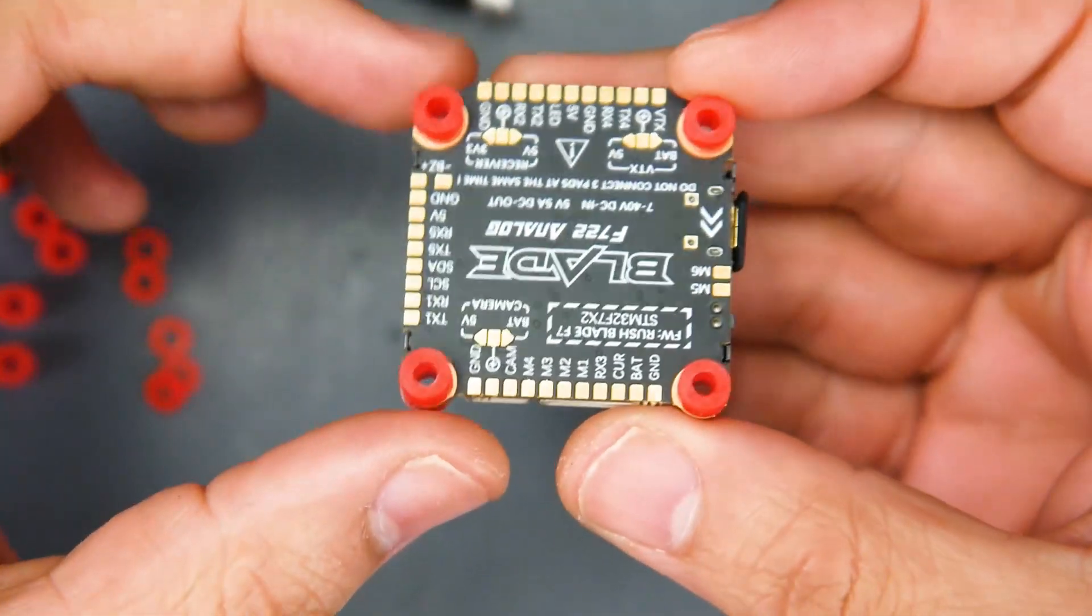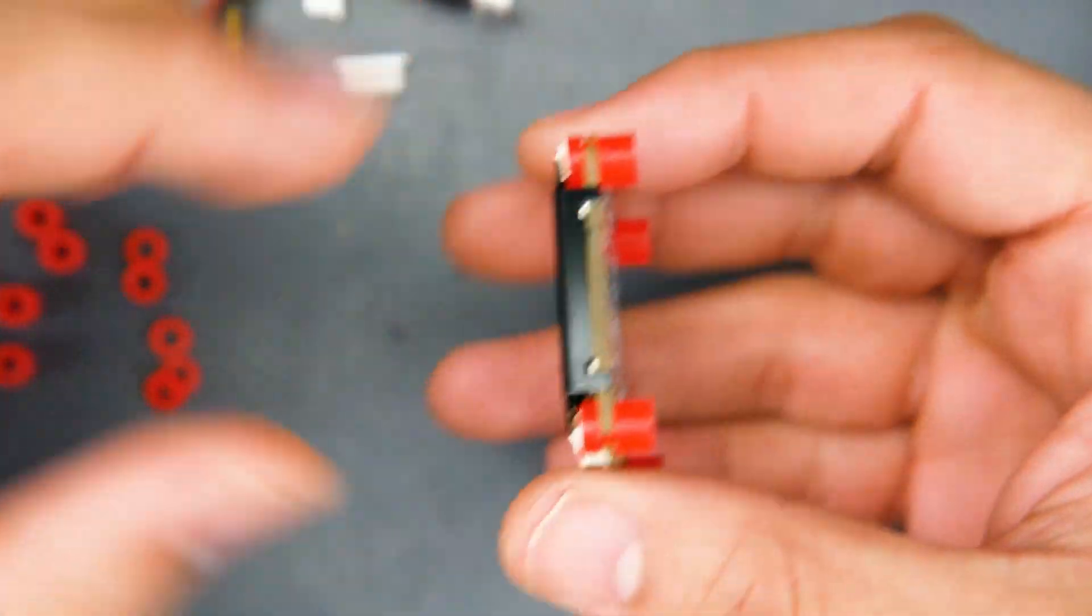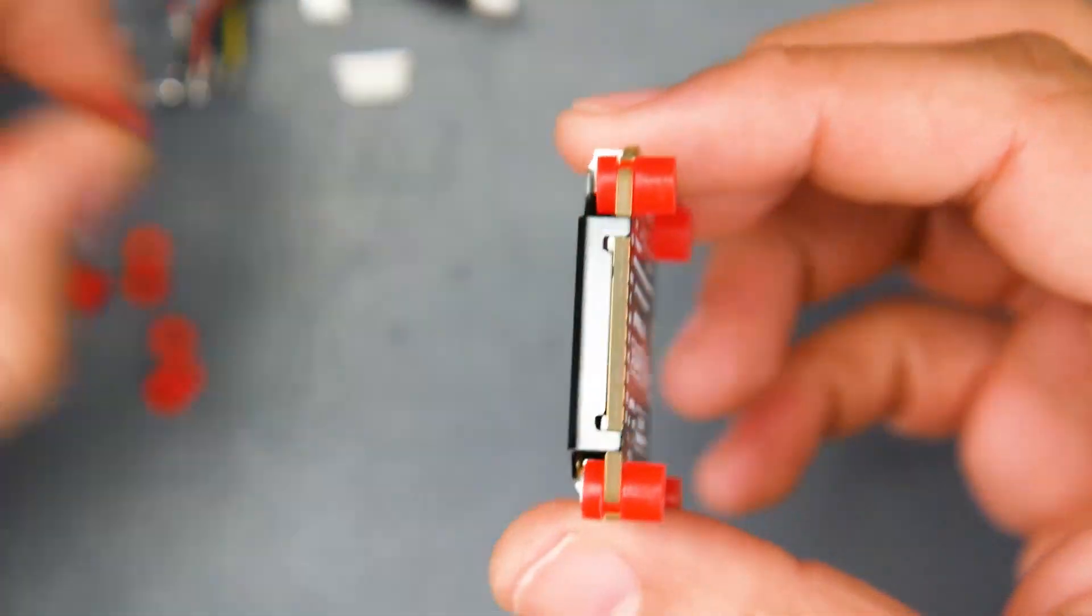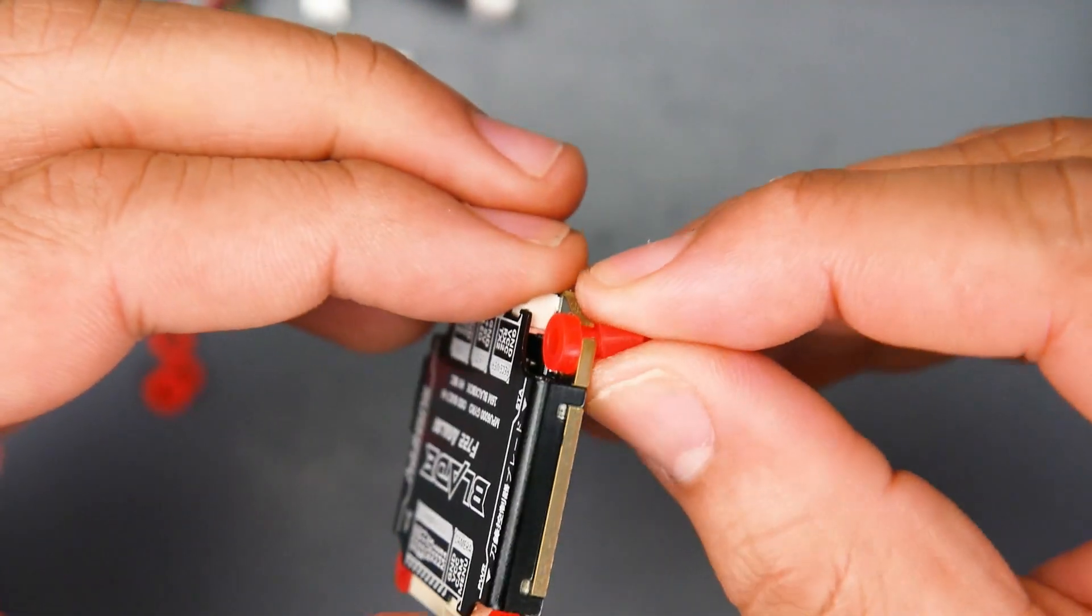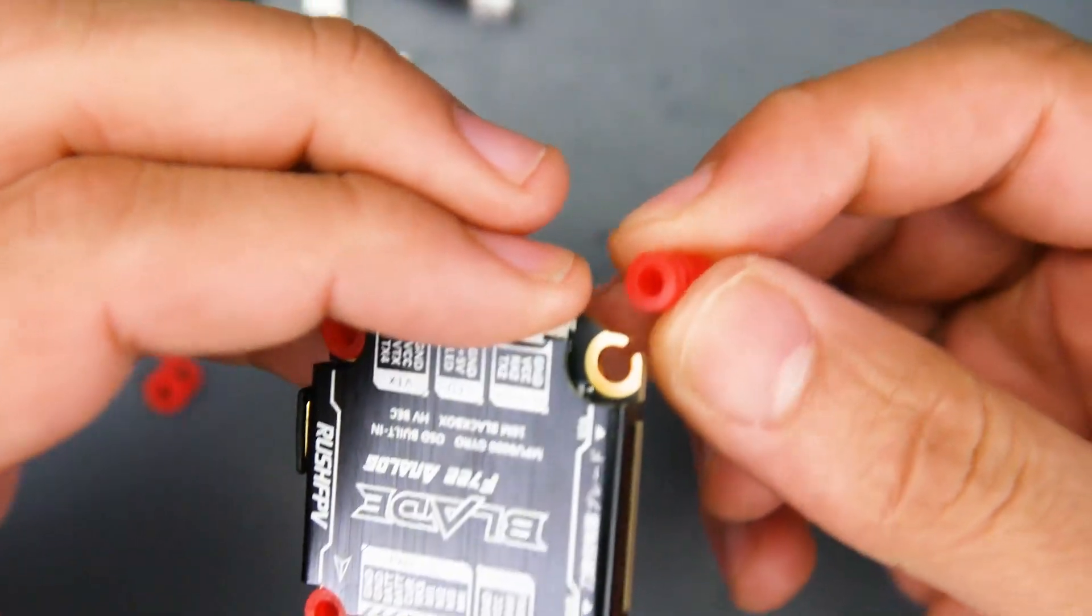Now for rubber grommets, they give you five of these longer ones. They also give you a bit shorter ones here. And what's really nice also, you're not going to have a hard time installing them because there's a cutout here, which makes the installation so much easier, which is really nice.